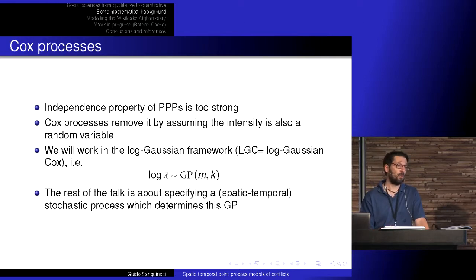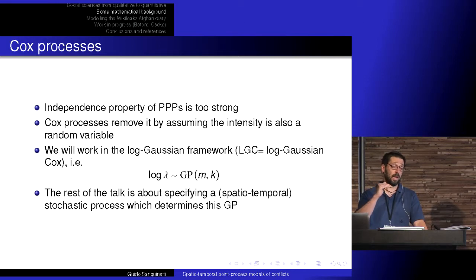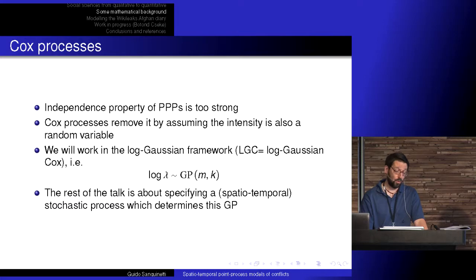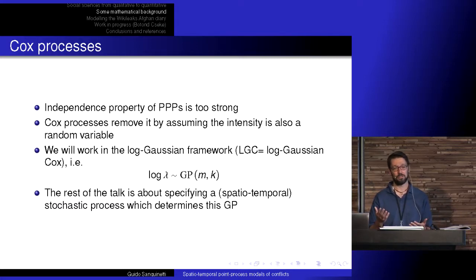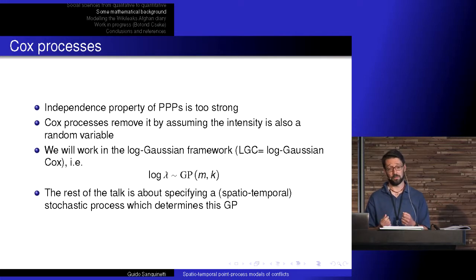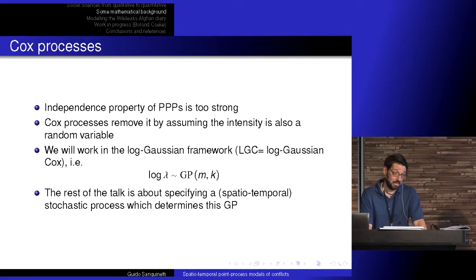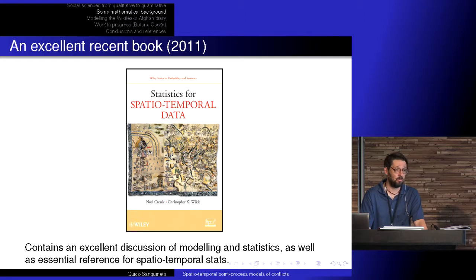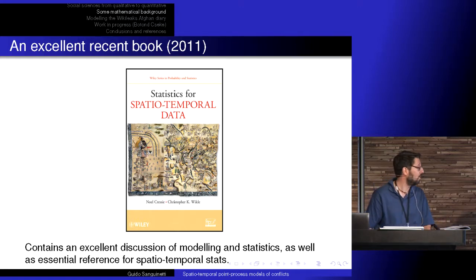Poisson processes imply statistical independence between disjoint sets, and that could be a problem — if I have a very problematic region in conflict terms, I'd expect nearby regions share a similar dynamics. So the independence property is too strong for many practical applications. The idea to get around this is the Cox process: we introduce a hierarchical model where the intensity function is itself a random function. In the simplest scenario, we assume the logarithm of the intensity is a Gaussian process. Gaussian processes are very nice because they arise as stochastic processes, so we can encode dynamics into them and crank the hierarchical Bayesian framework. I refer you to a very nice book by Cressie and Wikle.